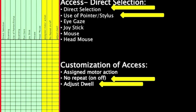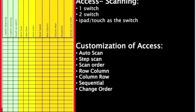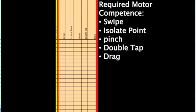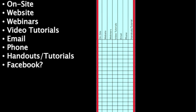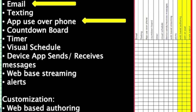Access-wise, we needed direct selection and the ability to use a pointer. For customization of access, if possible, the app would have no repeat or the ability to adjust dwell. We did not need to look into scanning in Nancy's case, and we weren't worried about the required motor competencies of the app. She wasn't worried about support, as there is somebody on site in her facility to help her with the app. Miscellaneous — she wanted to be able to email and use the app over the phone, but these were not her primary concerns. She just wanted a backup to speech.